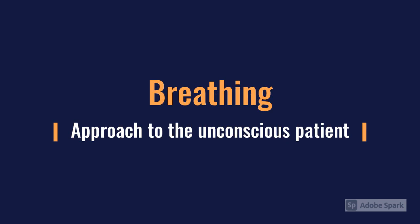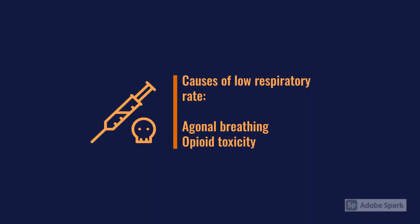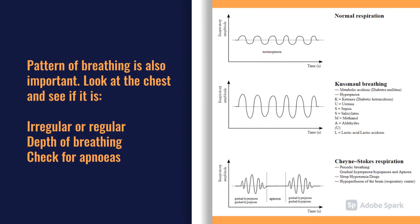Moving on to breathing: thinking about the unconscious patient, the first thing I want to know is the patient's respiratory rate. If they're hypoventilating or bradypnoeic, I'm going to want to start thinking about ventilating that patient — similar to circulation where you ask 'is there a pulse?' because the treatment strategy is very different. If you've got a bradypnoeic patient you may see agonal breathing or terminal stages of shock, and also in opioid toxicity. Looking at the breathing pattern is important too — Cheyne-Stokes, agonal breathing, or the exaggerated Kussmaul breathing seen in DKA.